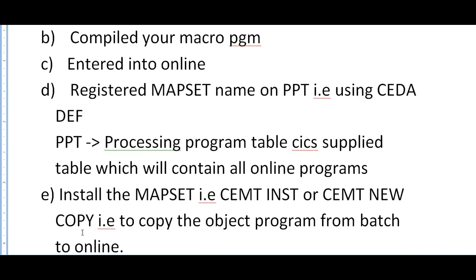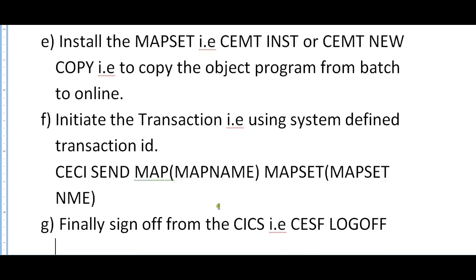This is how you display your map manually before doing any operations with the program. You might have a set of different maps to define — say 10 maps. First you define them, follow all these steps, and test them initially to verify that all fields and positions are displaying correctly on the screen in 24×80 columns. Once done, you sign off and start coding your program.